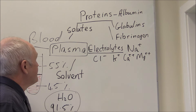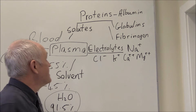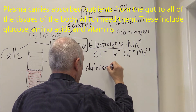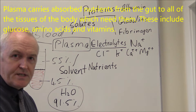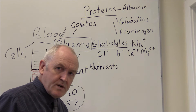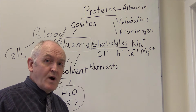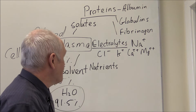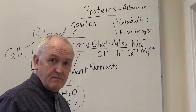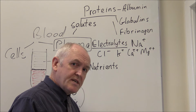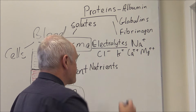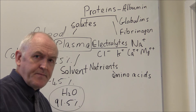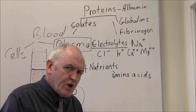So electrolytes are found in the plasma. Along with proteins and electrolytes, there are also nutrients. Nutrients are going to be absorbed from the gut and travel in the blood to the tissues where they are required. For example, the breakdown products of protein digestion - proteins are broken down to amino acids. And of course it's very important that there is glucose in the blood.